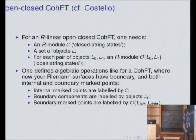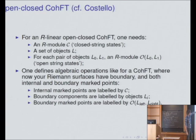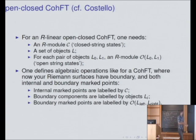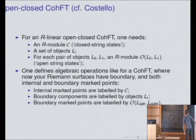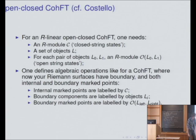This is closely related to some stuff in papers by Kevin Costello, but it's also clearly what Kontsevich's original motivation was even though he didn't write it this way. For an open-closed cohomological field theory, you still need this C that appeared in our cohomological field theory — that's closed string states. You also need a set of objects L, and for each pair of objects a set of open string states O from L0 to L1, like a Hom space in a category.